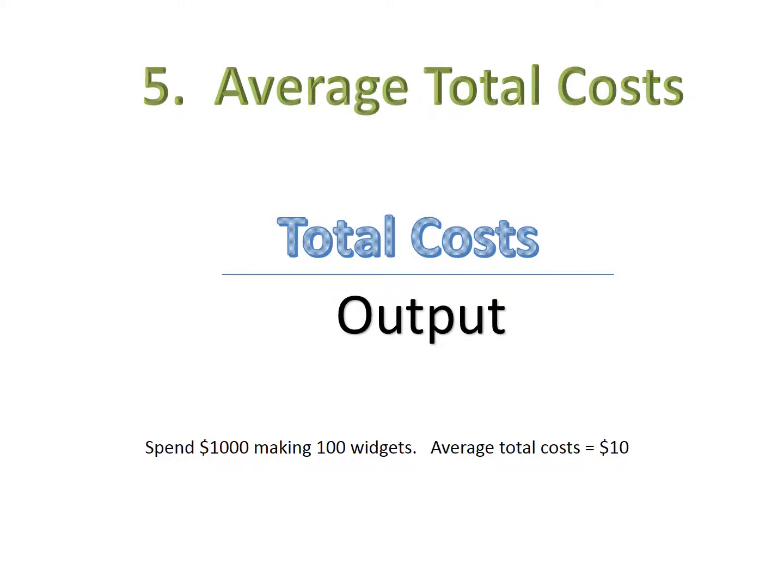Average total cost is just total costs divided by output. It tells you, on average, how much it costs to make each unit of output. Average total cost is really important because it tells you your break-even price. If you sell a good to everyone for the same price, that price is, on average, how much you get for a good, and your average total cost is how much you pay. To break even, you set price equal to average total cost. To make a profit, you've got to charge a price above this.